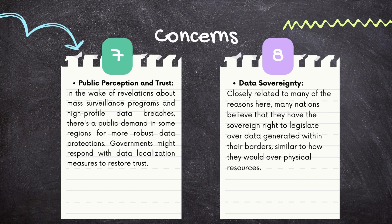Seventh, public perception and trust: in the wake of revelations about mass surveillance programs and high-profile data breaches, there is a public demand in some regions for more robust data protections. Governments might respond with data localization measures to restore trust.